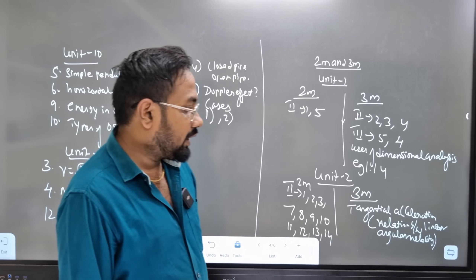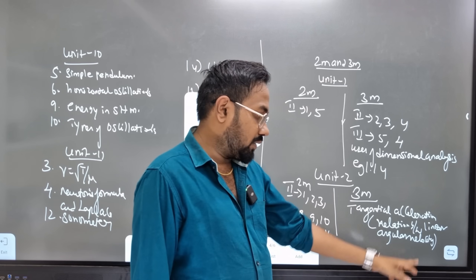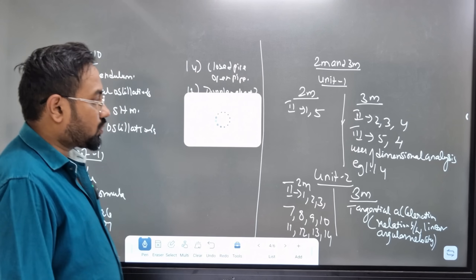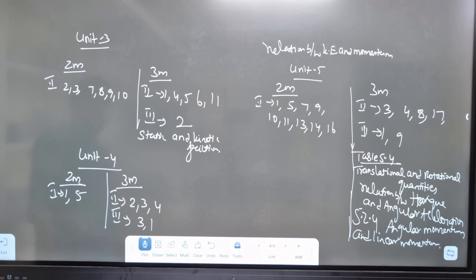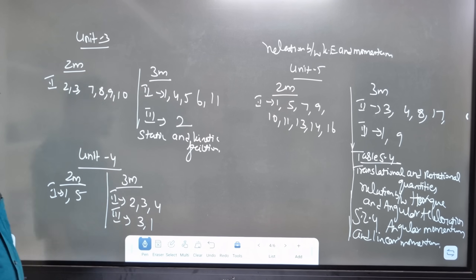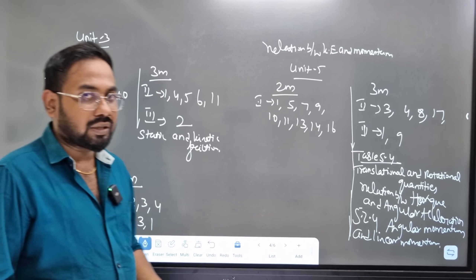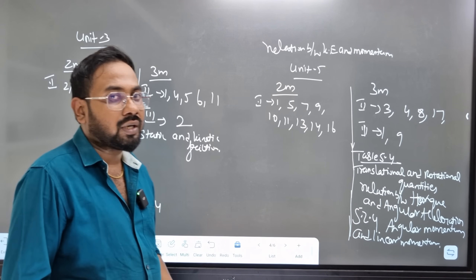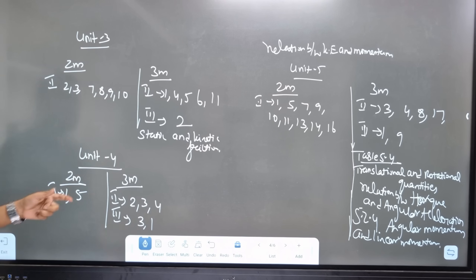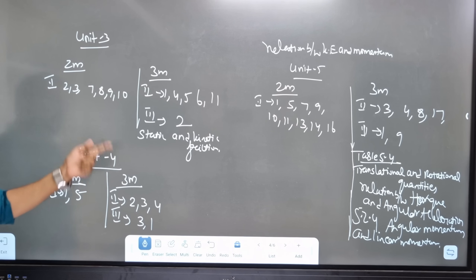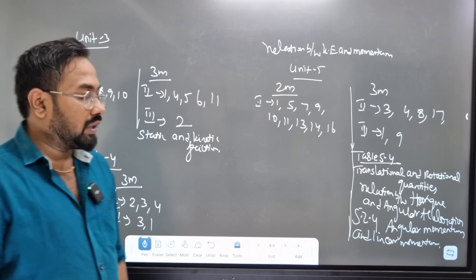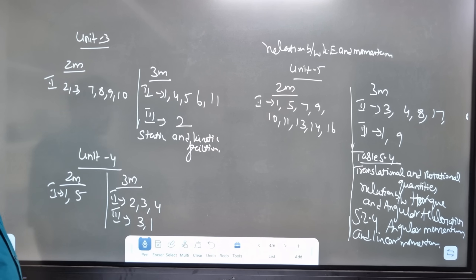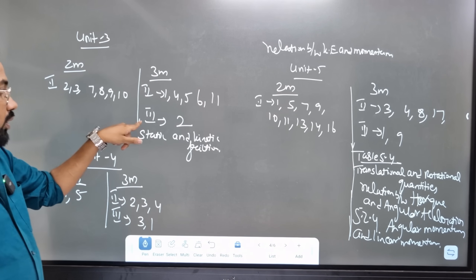The relation between linear and angular velocity, and tangential acceleration are important. Unit 3 is relatively easy — covering inertia, Newton's laws, Newton's third law. These are the same 2-mark and 3-mark questions we studied in 10th standard. Topics include push, pull, free body diagrams, and friction. Reducing friction is easy.